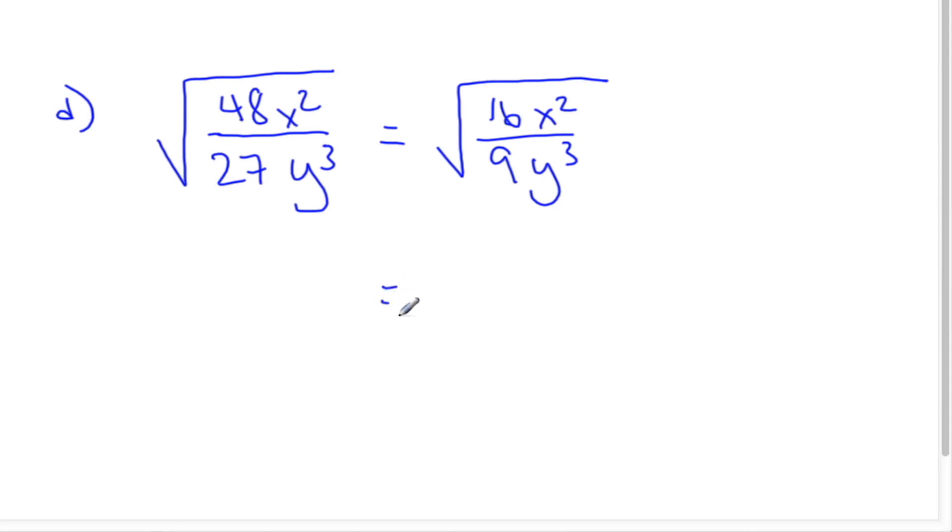Right. I can break these up into parts. I can go square root of 16, square root of x squared, square root of 9, and the square root of y cubed. I can break them all into little squares. If I do that, well, square root of 16 is easy. That's 4. This one here, well, what number times itself gets x squared? Well, that's going to be x. x times x is x squared.